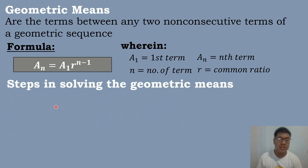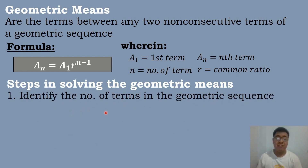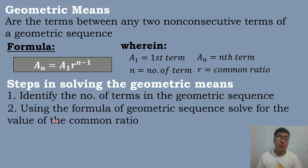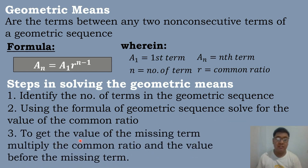Here are the steps in solving for the geometric means. The first step is to identify the number of terms in the geometric sequence. After that, use the formula of the geometric sequence to solve for the value of the common ratio. The last step is to get the value of the missing term by multiplying the common ratio and the value before the missing term.